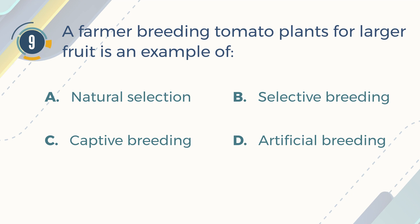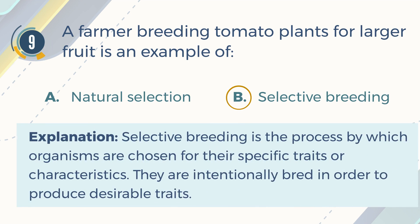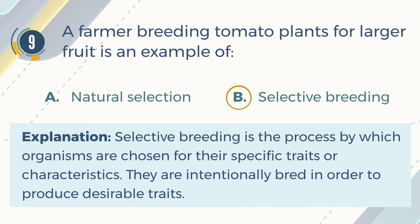The correct answer is B. Selective breeding. Explanation: Selective breeding is the process by which organisms are chosen for their specific traits or characteristics. They are intentionally bred in order to produce desirable traits.